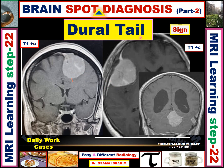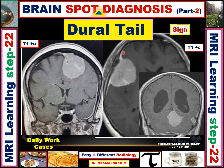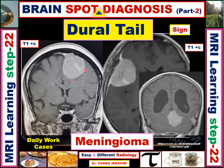The sign appearing here is the dural tail sign. We see an enhancing mass showing homogeneous enhancement and also a dural tail related to the dural-based regions in different sites. For example, this region is a tentorial site, representing a tentorial meningioma. This is a convexity meningioma with a dural tail, and this is another meningioma in the convexity. The dural tail sign represents meningioma in different places or sites.